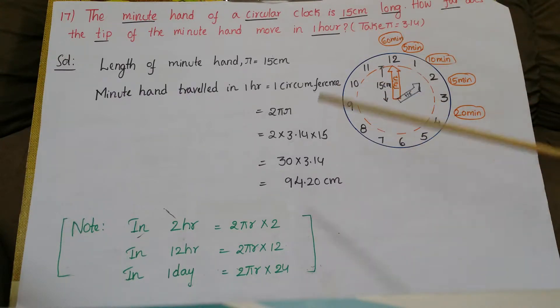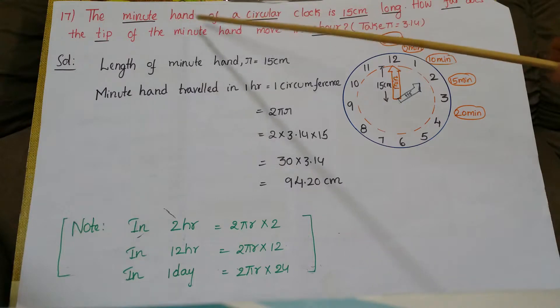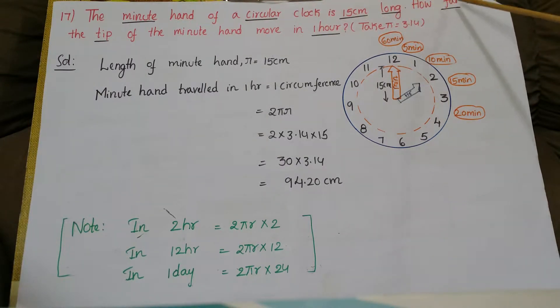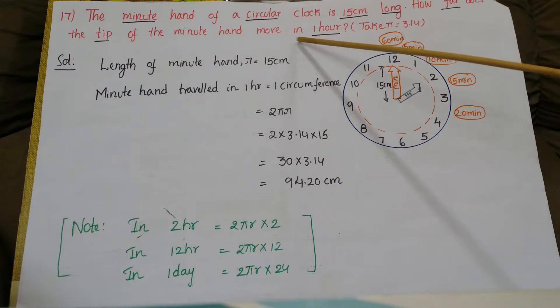This is a problem from NCERT, 17th problem from exercise 11.3. Before going to do this problem, please watch my video on distance traveled by hour hand and minute hand. So now let us go to the problem. The minute hand of a circular clock is 15 centimeters long. How far does the tip of the minute hand move in one hour? Take pi equals 3.14.